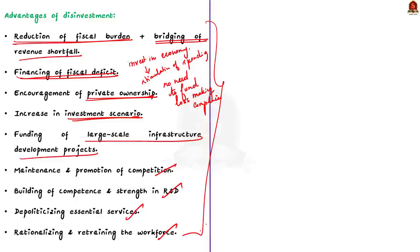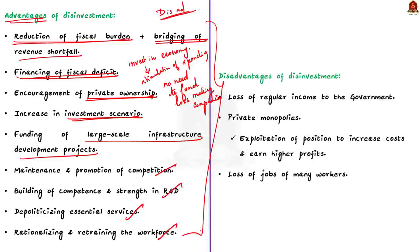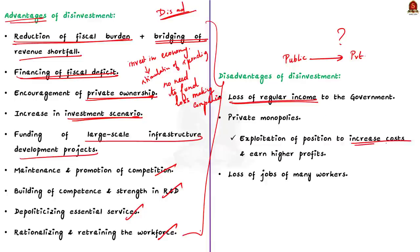Disinvestment also has disadvantages. First, the selling of profit-making PSUs results in the loss of regular income to the government — what if the company is just going through an economic cycle and will be profitable again later? Second, complete privatization may result in changing from public monopoly to private monopoly, leading to exploitation where private monopolies increase the cost of services for higher profits. Third, the private sector's profit motive leads to use of capital-intensive techniques, which may replace workers with heavy machinery, worsening unemployment in India.